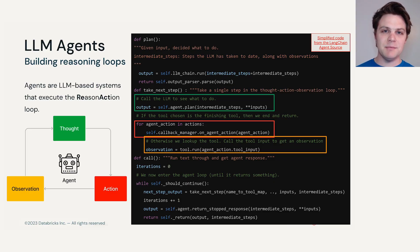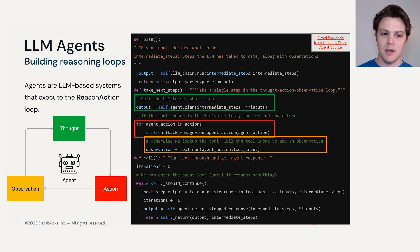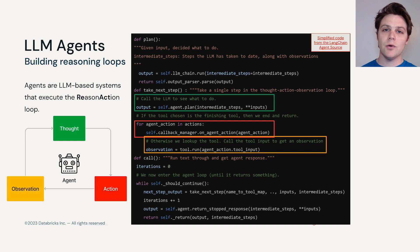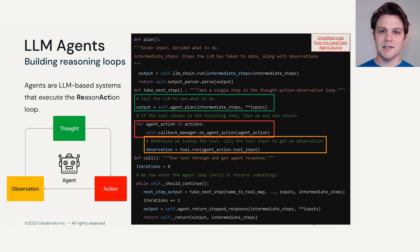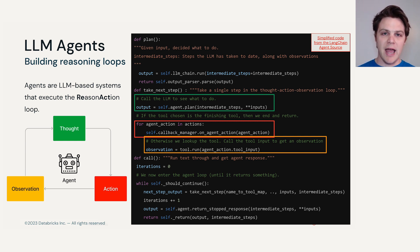An LLM agent is built up of reasoning loops that large language models have shown to be very adapted at performing. A large language model can be given a task and we can ask it to provide a plan or a thought process of how it would complete this task. We can then utilize this step-by-step approach and force the LLM to go through a thought, action, and observation loop.